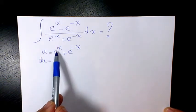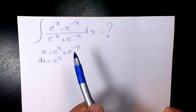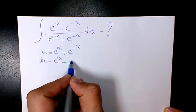And on the right hand side, the derivative of e to the power of x is just e to the power of x, and the derivative of e to the power of negative x will be negative e to the power of negative x, dx.